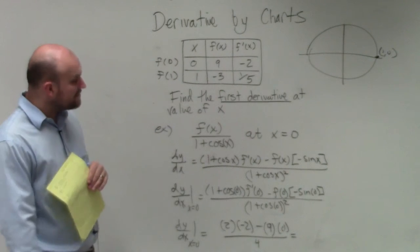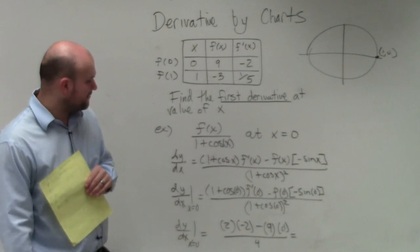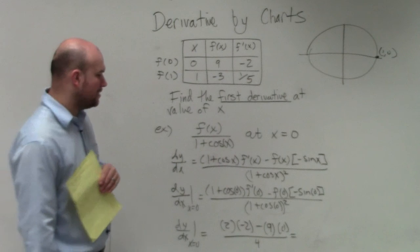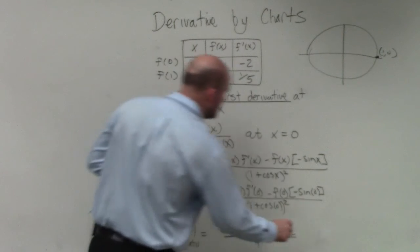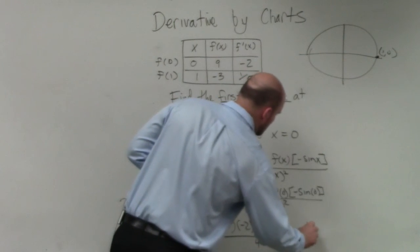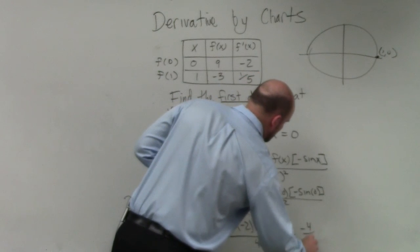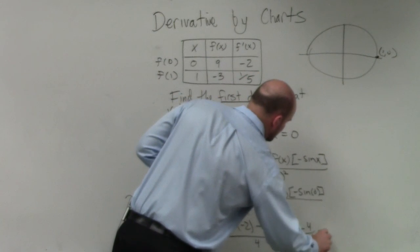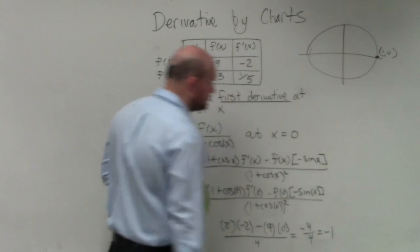2 times negative 2 is negative 4, and then 9 times 0 is 0, so the numerator is negative 4 minus 0, which is negative 4. So I have negative 4 over 4, which equals negative 1.